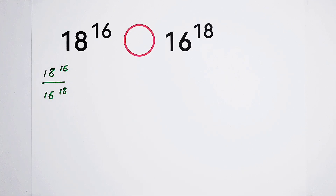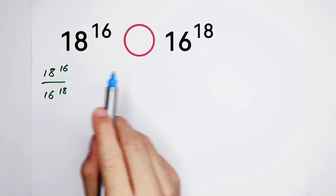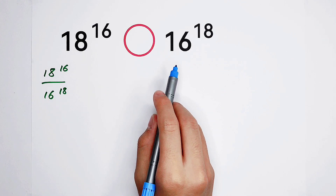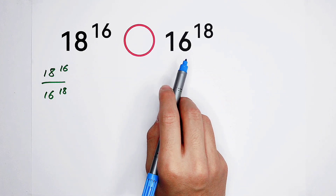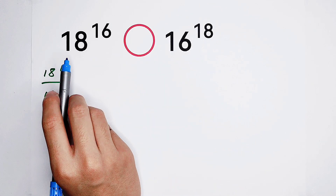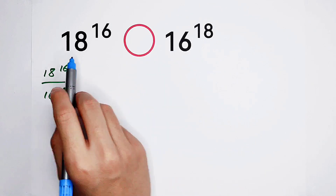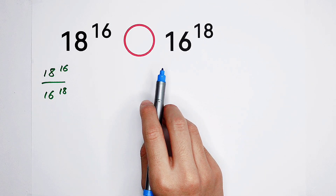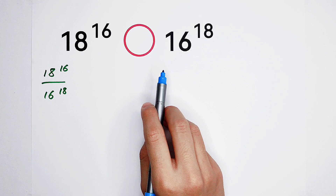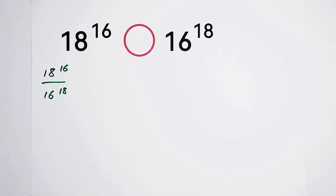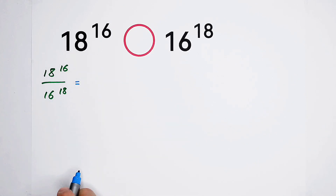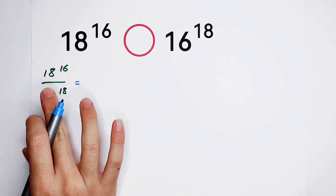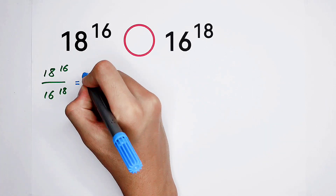Can you find some secrets between these two numbers? 18 and 16 — they're both even numbers. 18 is 2 times 9, and 16 is 2 times 2 times 2 times 2, which is equal to 2 to the power of 4. So now, transform it, write them in another way.